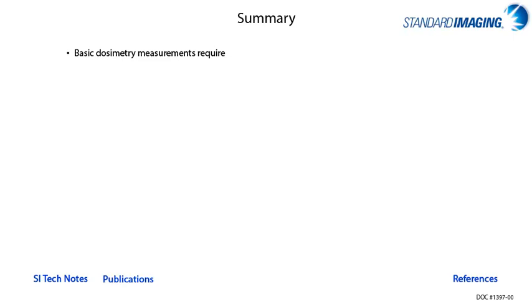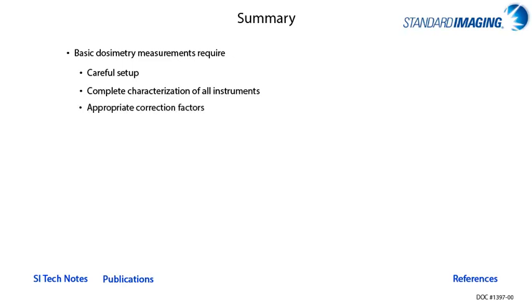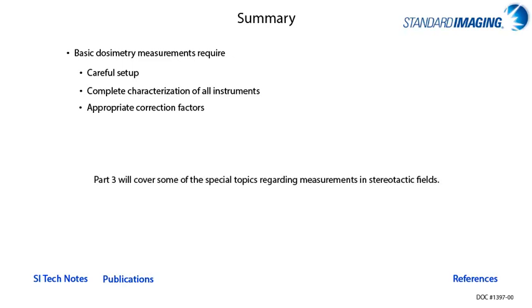To summarize, we have covered the basic steps for proper ionization chamber use in the radiation therapy setting, including a careful setup, complete knowledge of how the instrument functions, and any of the associated correction factors which need to be applied. Related to your detector characterization and correction factors, Part 3 of this tutorial series will cover some of the intricacies of measurements in small fields typically used for stereotactic procedures.